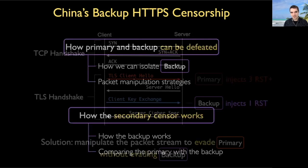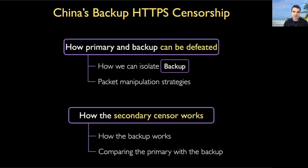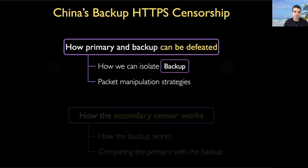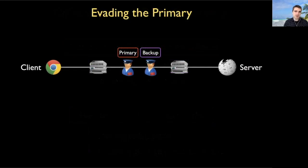For the rest of this talk, I'm going to split this into two halves. I'm first going to talk about how we can disable the primary without disabling the backup to isolate it, and also how we can defeat both simultaneously. We do this with packet manipulation strategies. Once we have the ability to disable the primary, I'm going to speak to how the backup works specifically and how it compares to the primary.